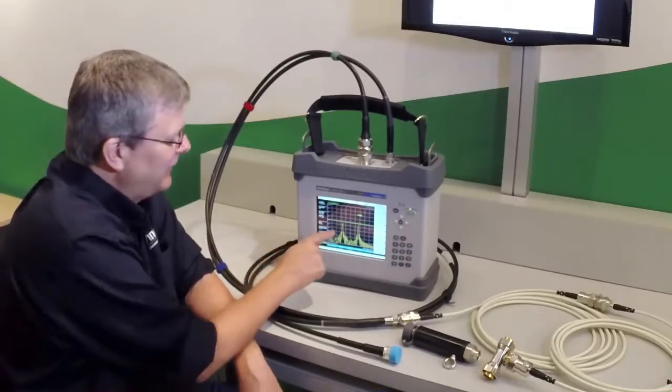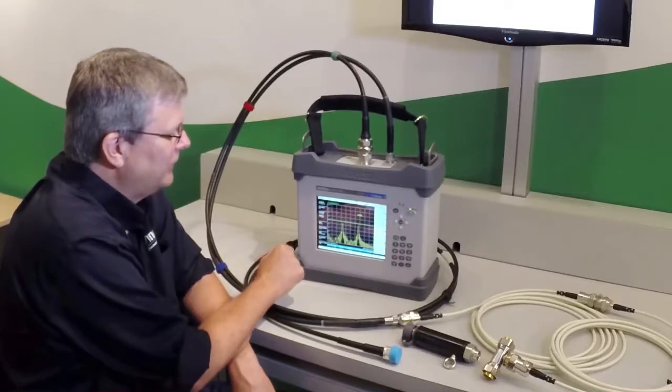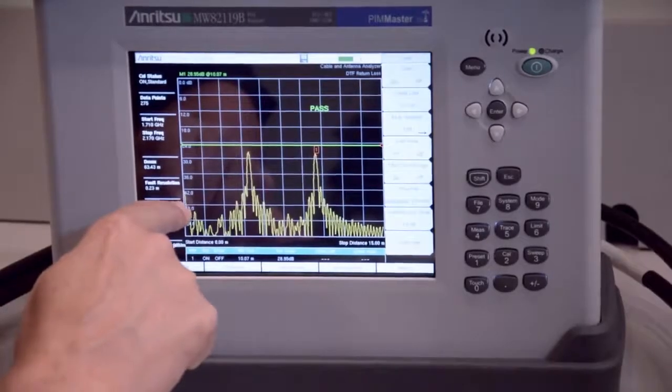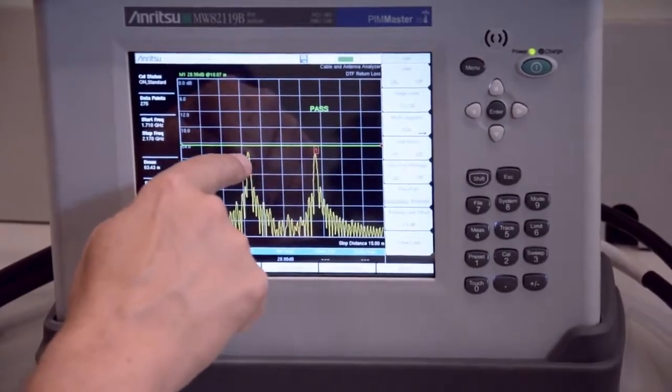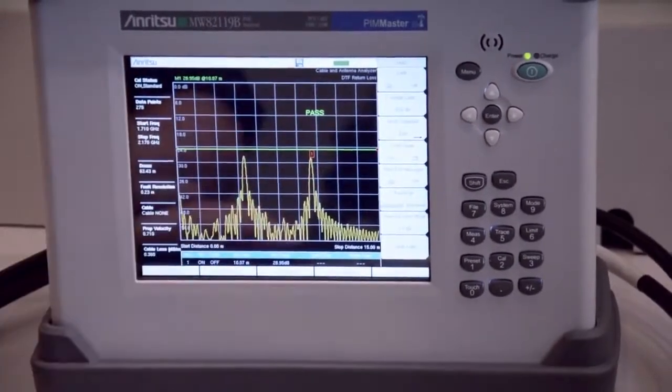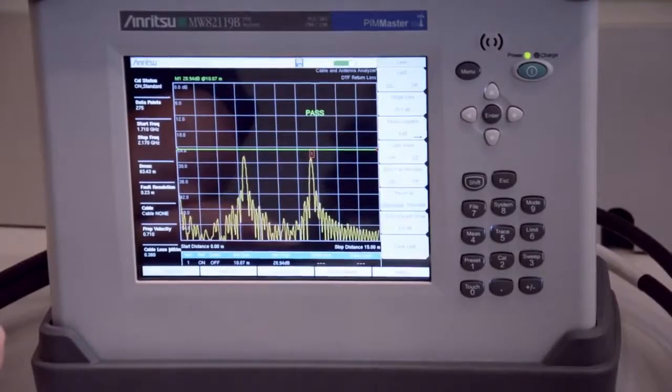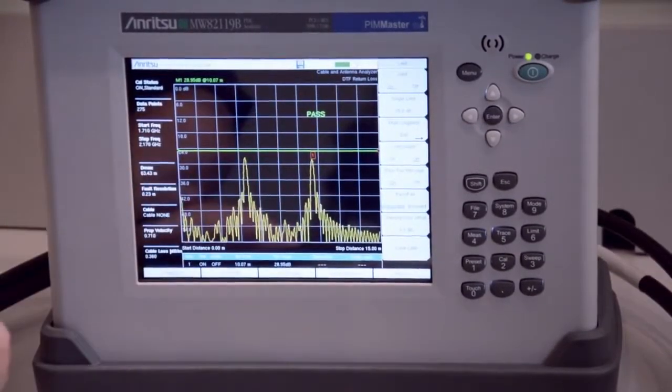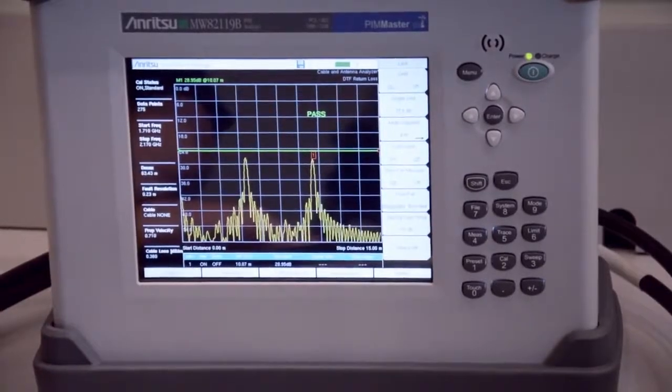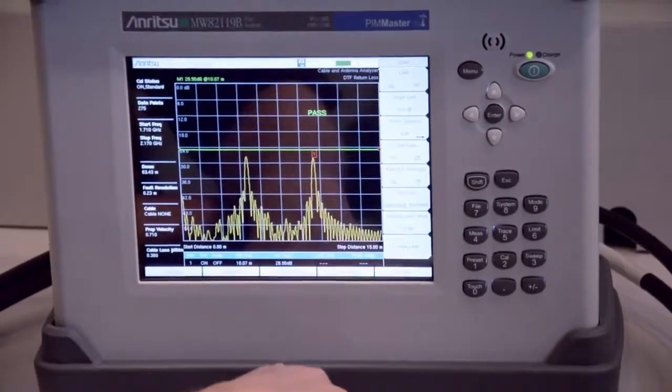And we can see here, due to the high resolution of distance to fault, that we have one cable or the first connector is here. At five meters, I can see the second connection and at 10 meters, I can very clearly see the third connection. And once again, all of these values are below 25 dB, so at this point, it looks like we have a system that's performing very well.